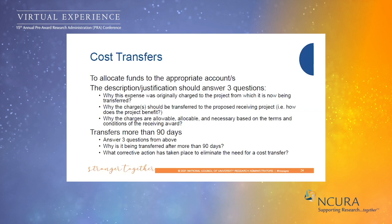If there's a cost transfer beyond 90 days, we need to know more than just why it happened. We also need to know why it is happening beyond 90 days and what corrective action has taken place to eliminate the need for a cost transfer in the future. The auditor must be able to understand why it happened and why it is not expected to happen again.